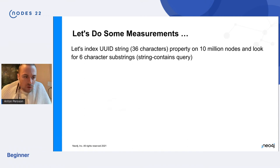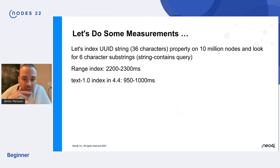Okay. So how does this perform then? So we have a synthetic data set here with UUIDs. They are 36 characters long and we have 10 million nodes and we look for six characters, some substrings. Using the range index, the new one in Neo4j 5, it takes between 2.2 and 2.3 milliseconds. The text index from 4.4 is a bit better around the second.